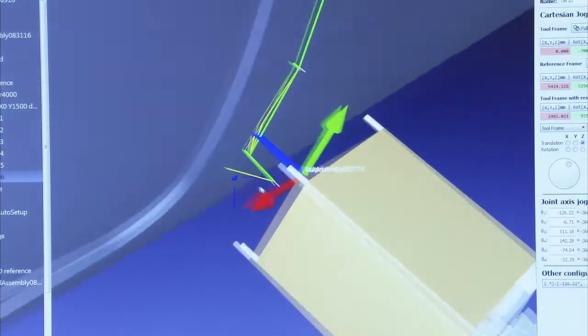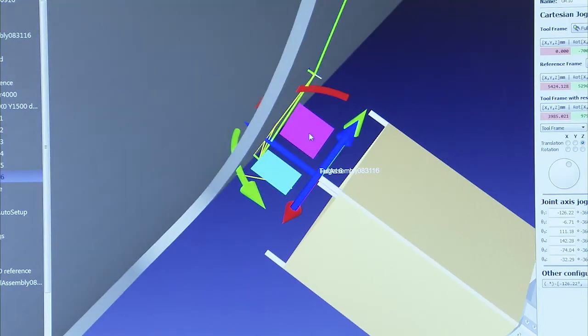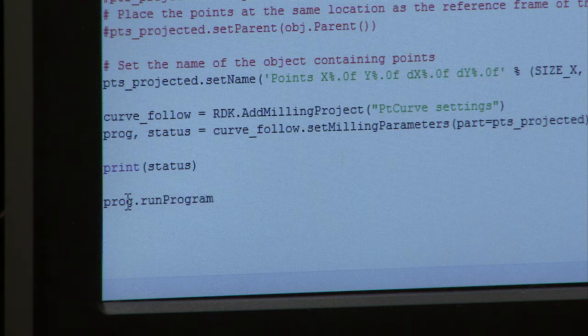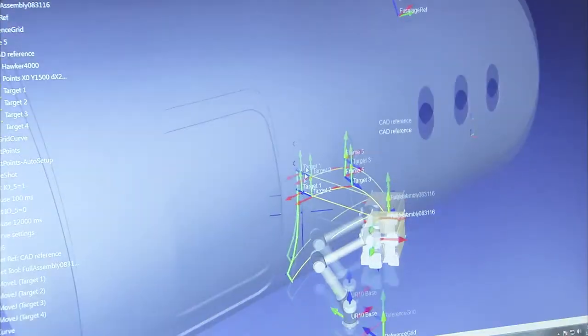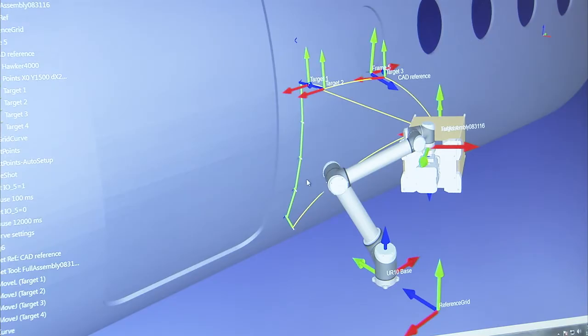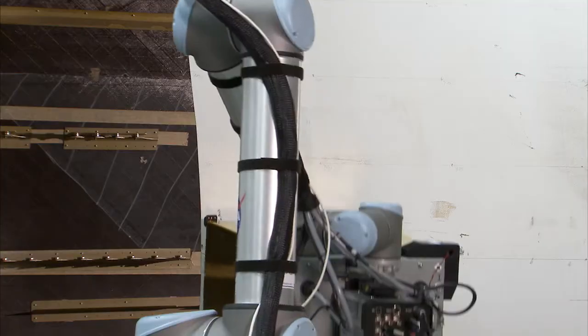One other advantage of developing this robotic system is that we can do other inspections other than infrared thermography. We could do ultrasound, we could do eddy current, both of which are typically used in aircraft inspections, which allows you to get different information and allows you to compare techniques as well.